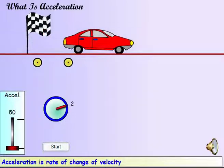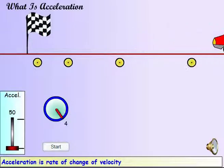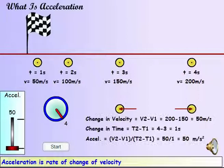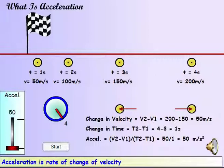Acceleration is the rate of change of velocity. When the velocity is constant, the acceleration is zero, and the car covers equal distances in the same time interval. When it is accelerating, the distance covered in successive time intervals keeps growing. Acceleration is computed by dividing the change in velocity between any two successive points by the time taken to move between those points.